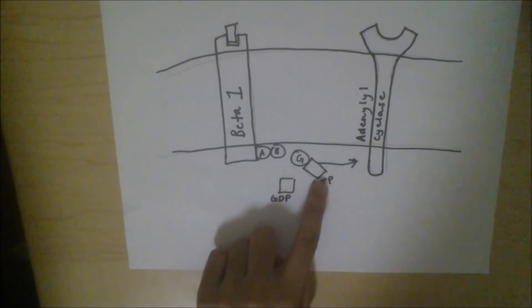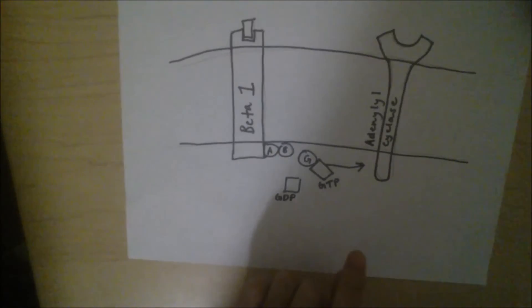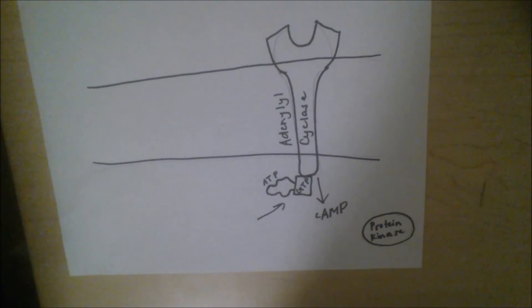The G protein meets the enzyme adenylyl cyclase. This enzyme causes the formation of cyclic adenosine monophosphate, CAMP, and is aided by ATP.